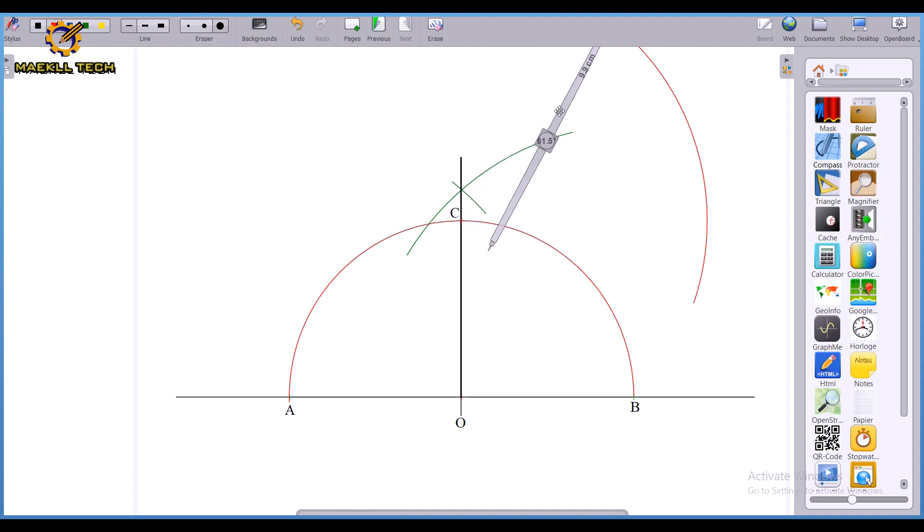That is one of the principles of bisection. The same length you actually used to do your first arc must not change. It must remain constant. So I'm going to pick my compass to point B right here. Then draw another arc intersecting the arc I drew previously.